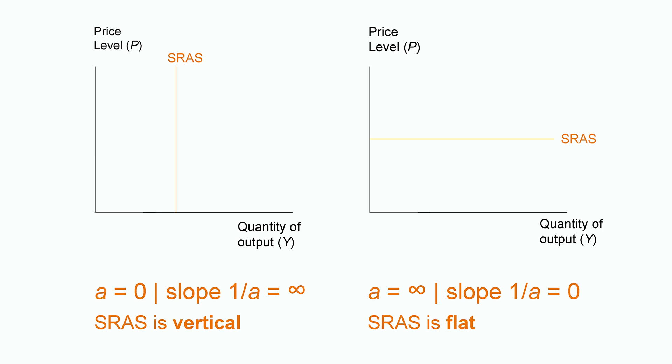If A is a very large number instead, tending to infinity, for example, slope is going to tend to 0. Then, short run aggregate supply will be very flat. The larger A is, the flatter short run aggregate supply will be.